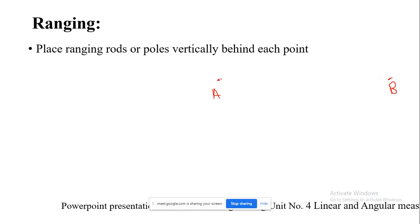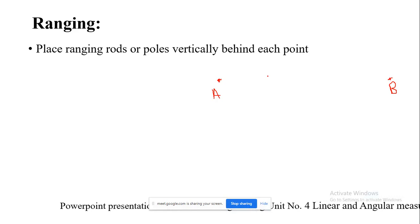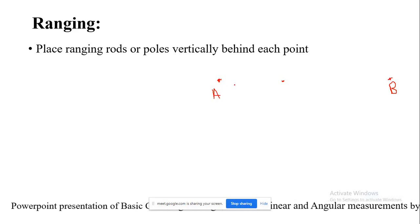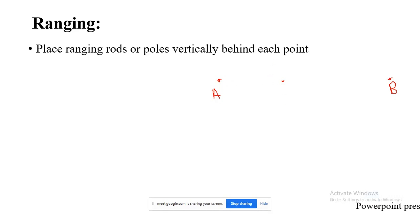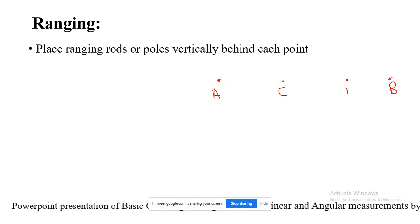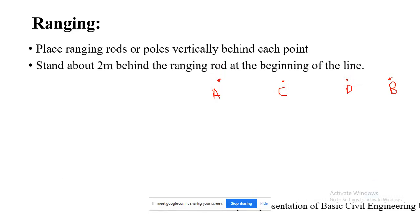In the ranging operation, a person with a ranging rod stands at station A and another stands at B. A third person carrying a ranging rod is brought to a certain distance from A and guided to move left or right so that points A, B, and C are in a straight line. Similarly, a fourth person marks point D as an intermediate station. We will see the video to understand this better.